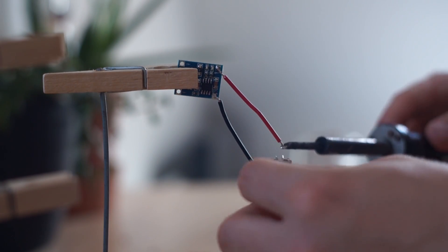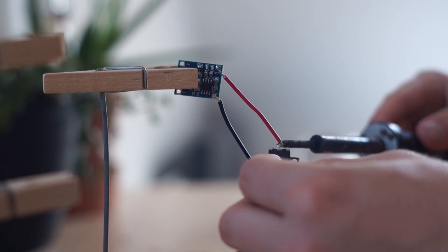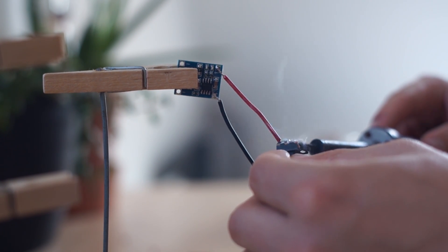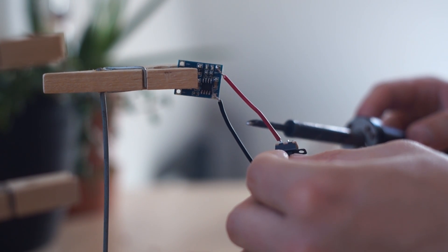Now it's time to connect the power switch, so we're going to take the positive cable and solder it onto one of the pins, then we're going to solder a second wire onto the middle pin and that's going to go to the rest of the components. We can leave the negative wire without the switch because we only need to have the switch cutting off one of the wires.